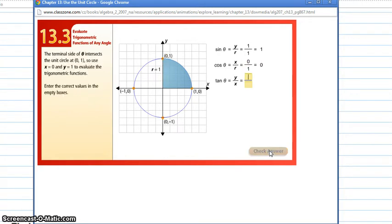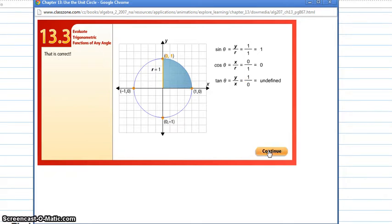And just as a check for us, our tangent value is our y over x, and that will always be no matter what the radius is. So our y value is 1 and our x value is 0, which as we know we can't divide by 0. So our tangent at 90 degrees is undefined.